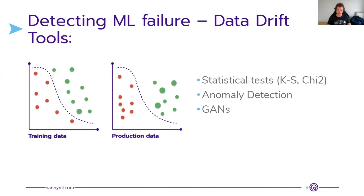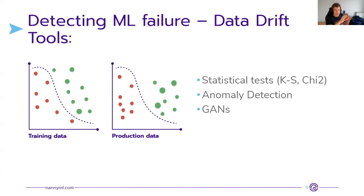If you want to look at multiple variables simultaneously rather than one at a time, a nice way is to run anomaly detection. Fit an anomaly detection algorithm — something like one-class SVM or isolation forest — on data where you have labels and know the performance. As time passes, watch whether more anomalies appear. More anomalies in the current dataset compared to the previous one is a strong indication that data drift is happening.